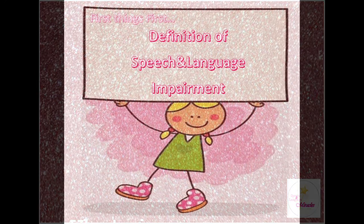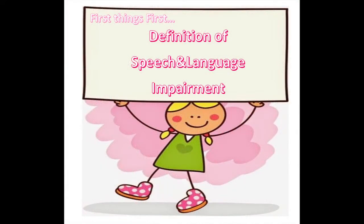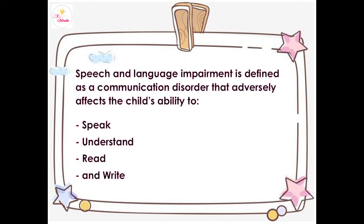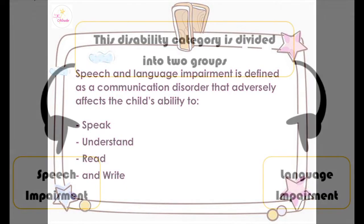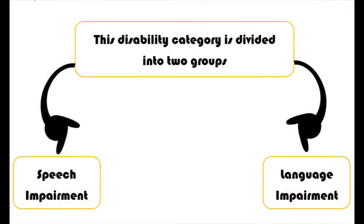First, the definition of speech and language impairment. Speech and language impairment is defined as a communication disorder that adversely affects the child's ability to speak, understand, read, and write. This disability category is divided into two groups: speech impairment and language impairment.